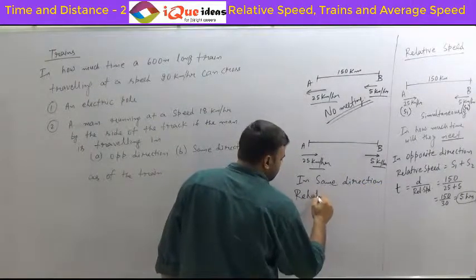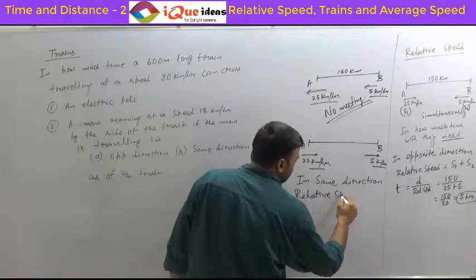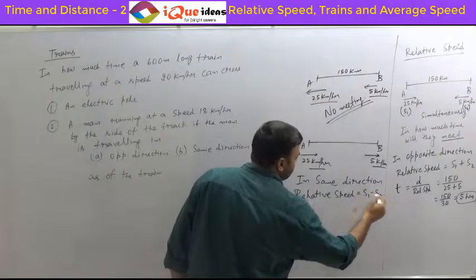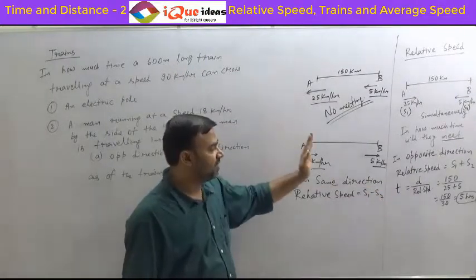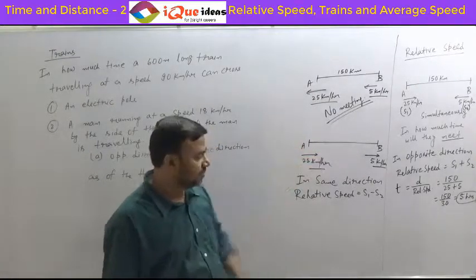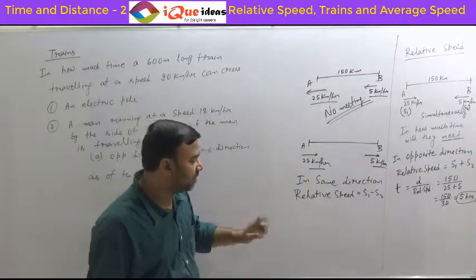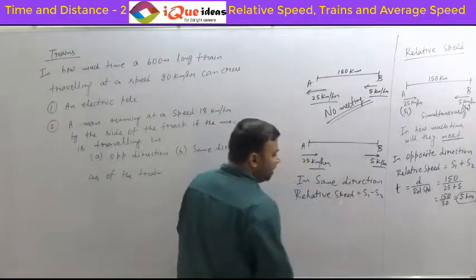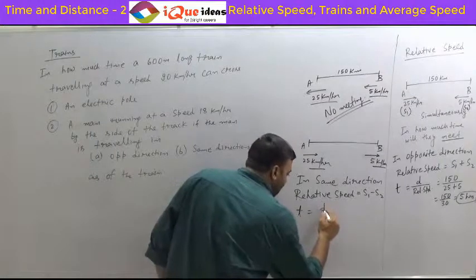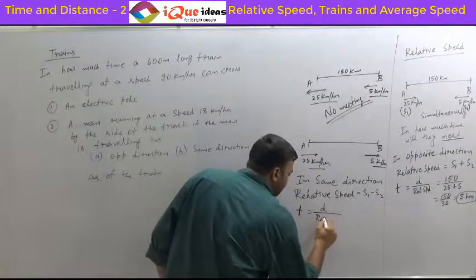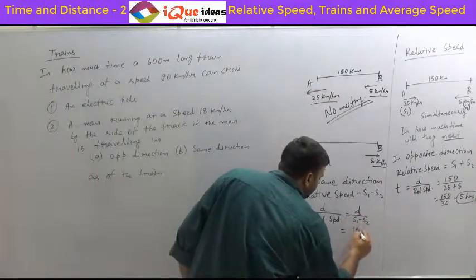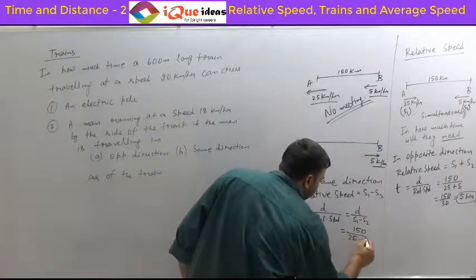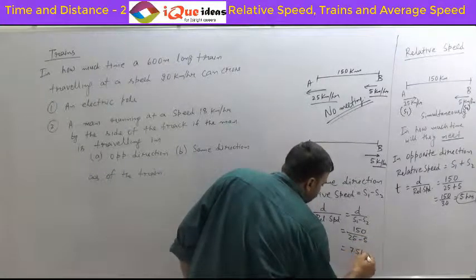In the same direction, relative speed — the effective effort towards meeting — is S1 minus S2. The condition is S1 must be greater than S2; the faster one must be behind. Then only meeting is possible. So relative speed is 25 minus 5, that is 20. Time equals distance divided by relative speed, which is 150 divided by 25 minus 5, which is 7.5 hours.